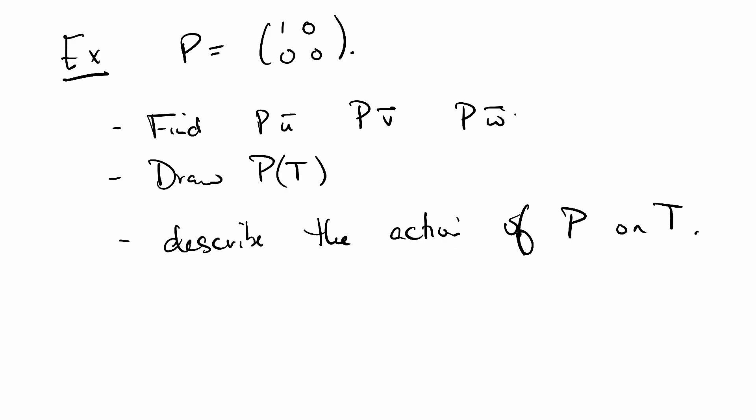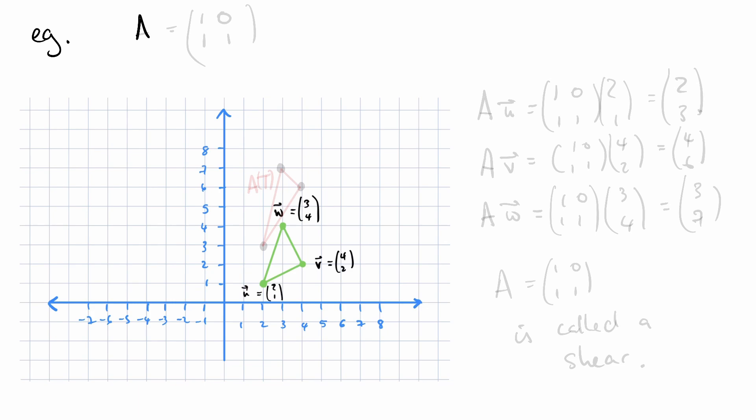Let's do another example. Say A is 1, 0, 1, 1. Here is our graph again. Let's check what happens to the points. AU is 1, 0, 1, 1, 2, 1, which is 2, 3. That is right here.